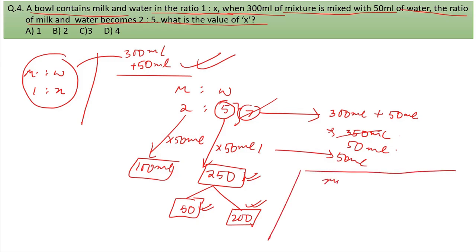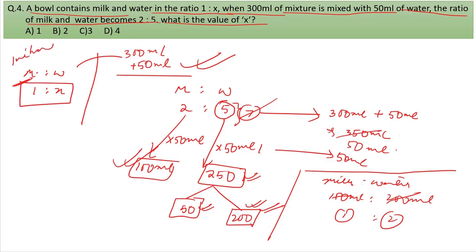Milk quantity is 100 ml, and water quantity is 200 ml originally. So the initial ratio of milk to water is 100 to 200, which simplifies to 1 to 2. Therefore, X equals 2.